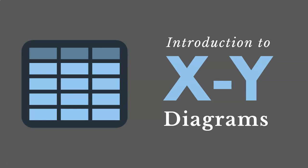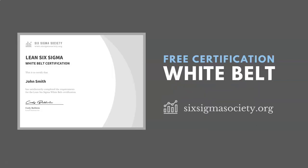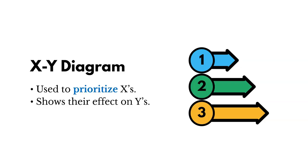Before we jump in, let me mention that if you're interested in a Lean Six Sigma white belt certification course that you can access for free, you can go to sixsigmasociety.org. This is a tool used to prioritize inputs, or X's, and to show the effect of those inputs on our outputs, our Y's.